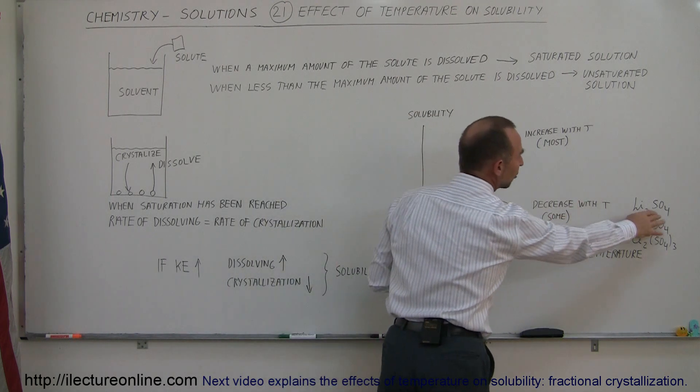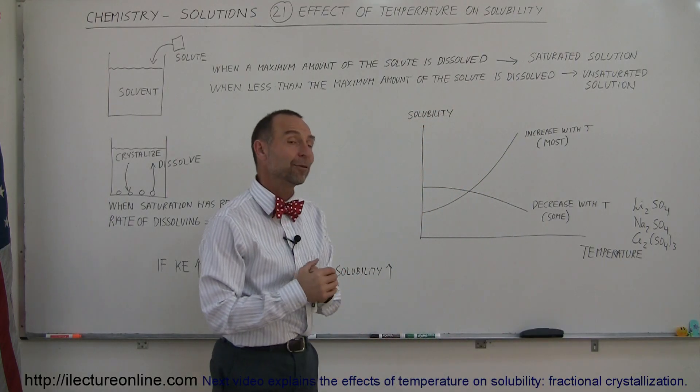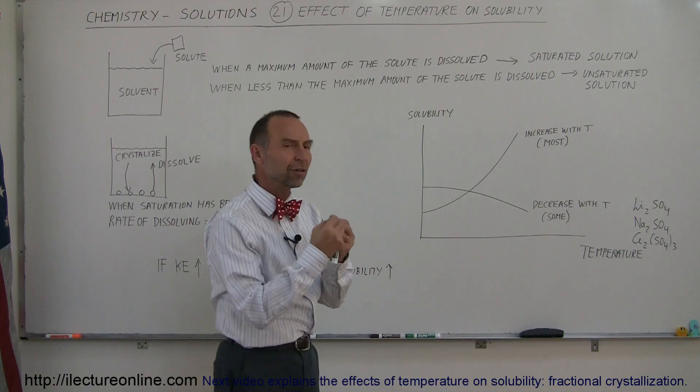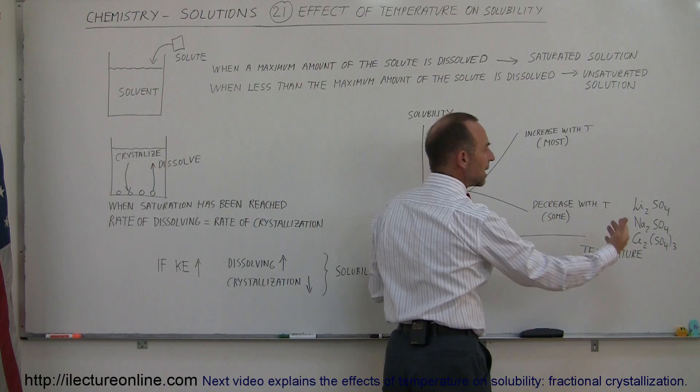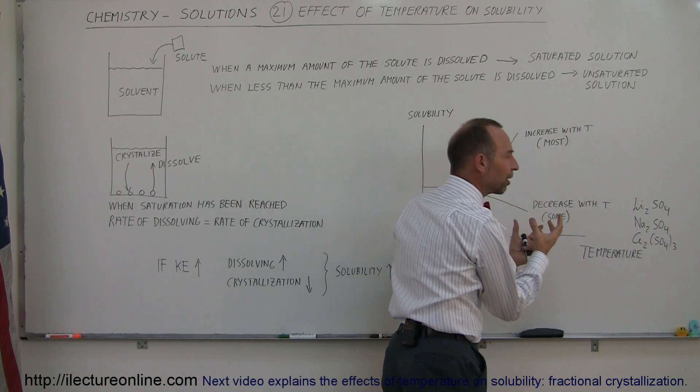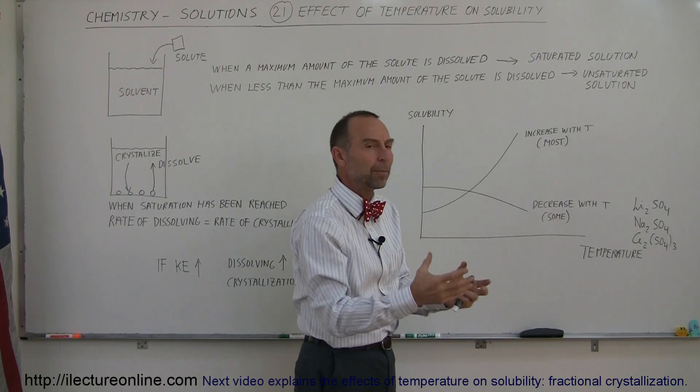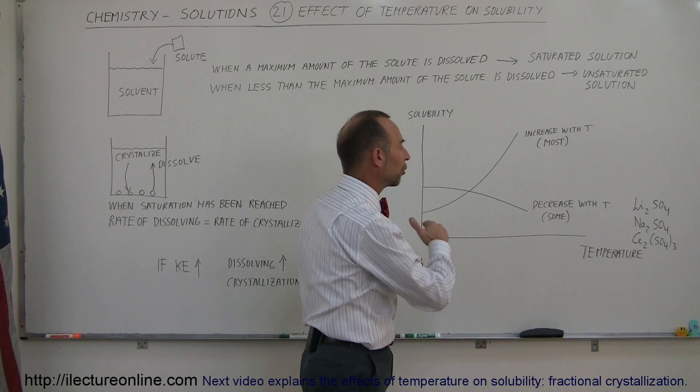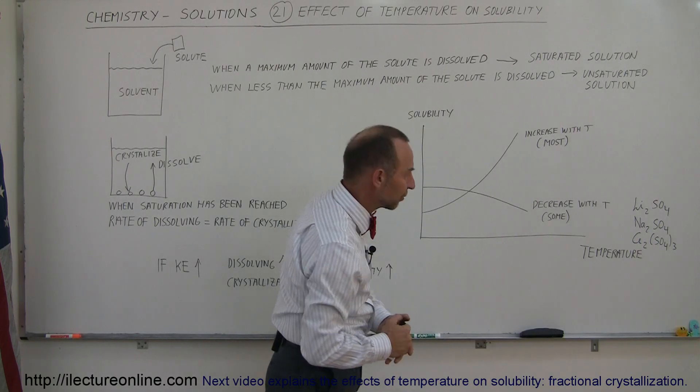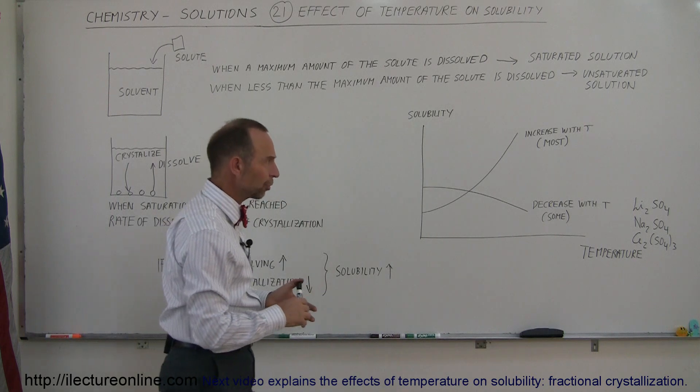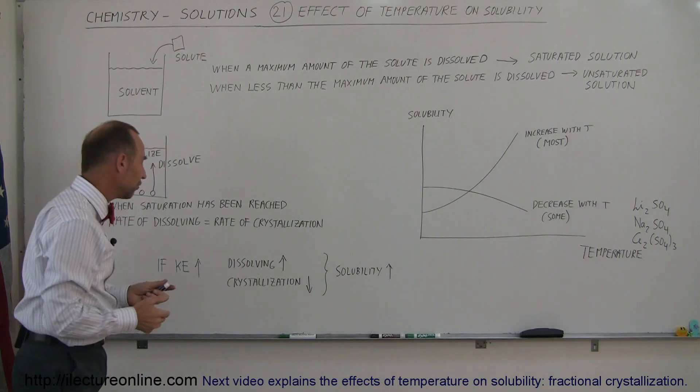Some examples are lithium sulfate, sodium sulfate, and cerium sulfate. All three are dealing with the sulfate ion. The sulfate ion is one of those ions that, once it goes into solution, the water molecules tend to structure themselves around it in a particular way, taking energy out of the solution. It takes more energy to break them apart and put them into solubility. Therefore, with increasing temperature, that solubility becomes less and less. But the vast majority of cases, solubility will increase with increasing temperature.